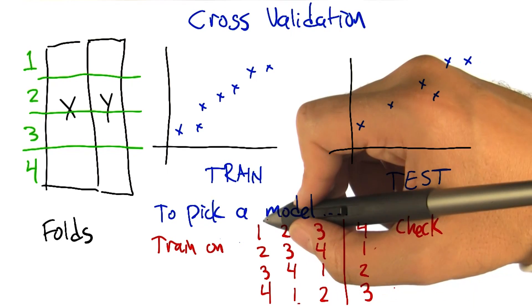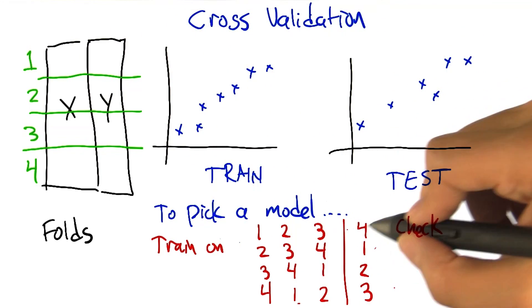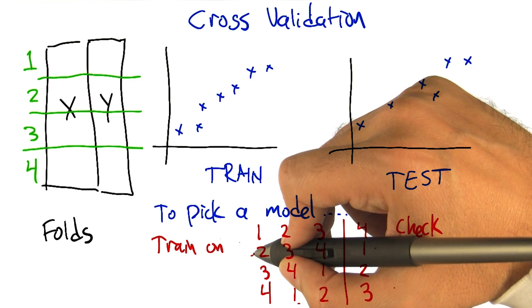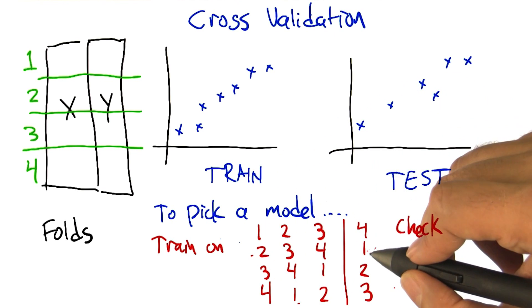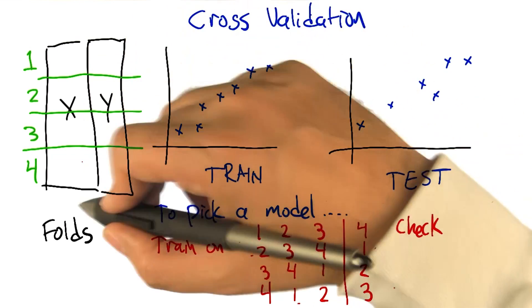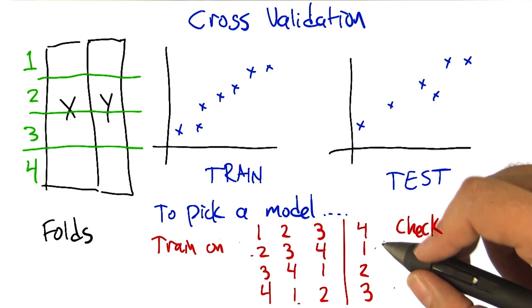Alright, so what we're going to do is train on the first three folds and use the fourth one to see how we did. Train on the second, third, and fourth fold and check on the first one. And we're going to try all these different combinations leaving out each fold as a kind of fake test set.